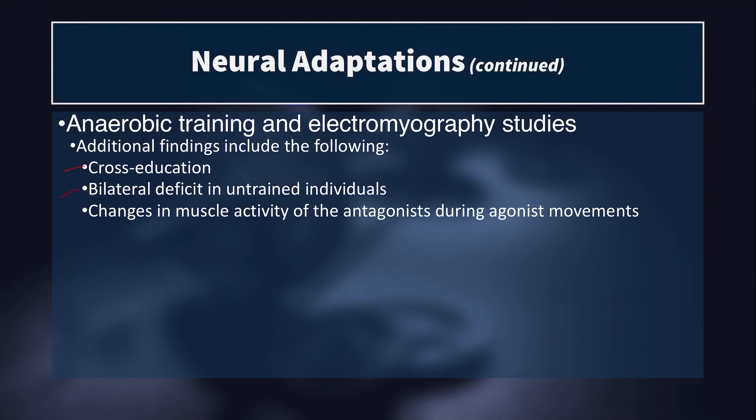We also see changes in antagonist activity during agonist movements — specifically a decrease in co-contraction of muscles around the joint. In a jumping movement requiring rapid hip and knee extension, the hamstrings as antagonists might be overly active, impeding knee extension. Through resistance training and anaerobic training like plyometrics, we can decrease antagonist muscle activation so it no longer slows down or impedes the agonist muscle.